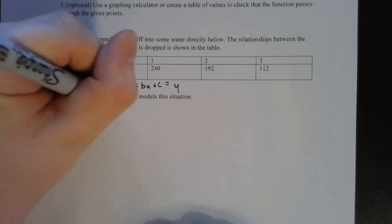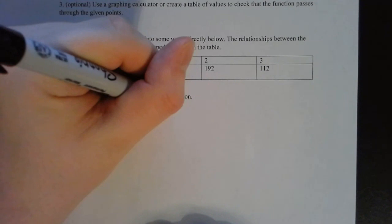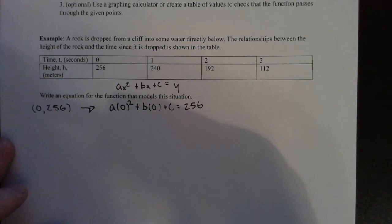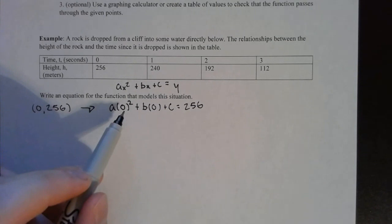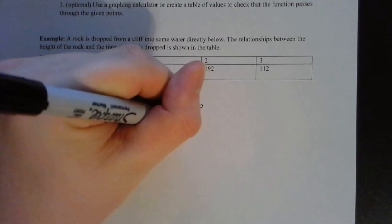So I'm going to do that now. A times zero squared plus b times zero plus c, and now I'm plugging in the y, 256 for y. Now what we'll notice here for this one, since we're plugging in zero, zero squared is zero, a times zero is zero, this goes away. B times zero is zero, this goes away. We're left with just c equals 256.